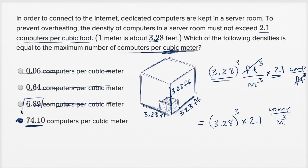This choice is interesting, because if you look at it, this is kind of an answer to pick if you forgot to convert to cubic, if you forgot to convert how many cubic feet are per cubic meter, and if you just kept things in linear meters and feet. Because then you might say, okay, if I have 2.1 computers per cubic foot,